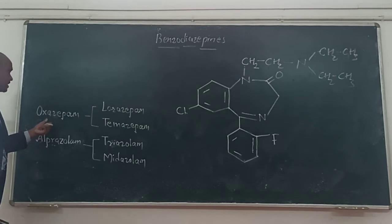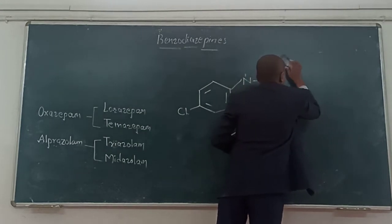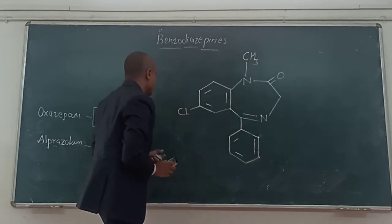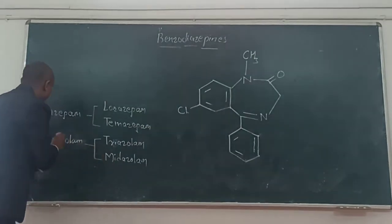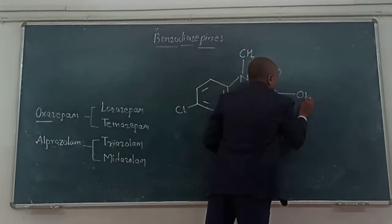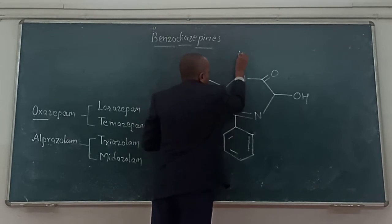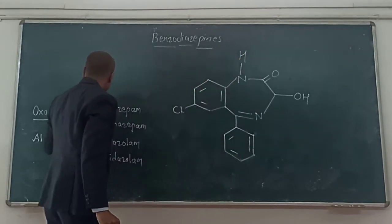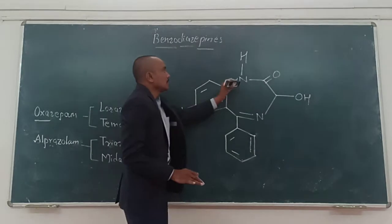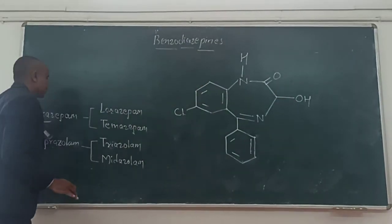Coming to the other series — oxazepam. We go back to the structure of diazepam as the base. To convert it into oxazepam, we observe the presence of a hydroxy group added at the third position. Also, the methyl group is replaced with hydrogen. These two changes in the diazepam structure give us oxazepam.